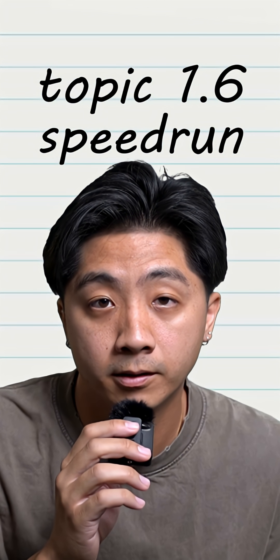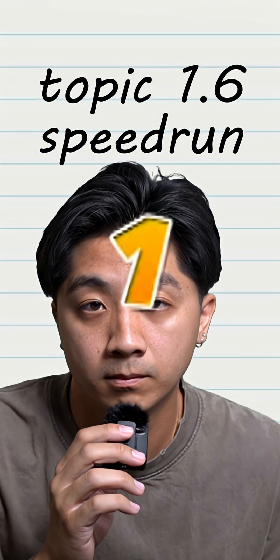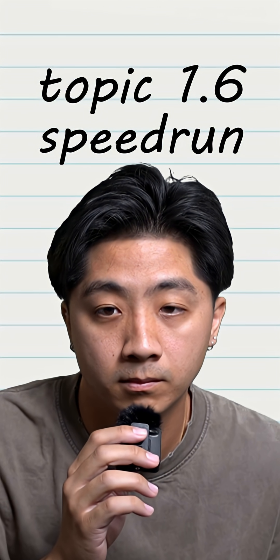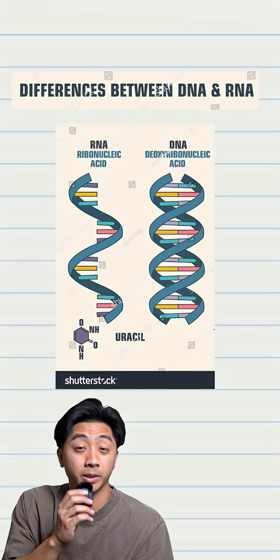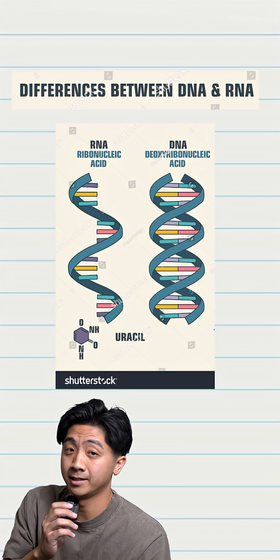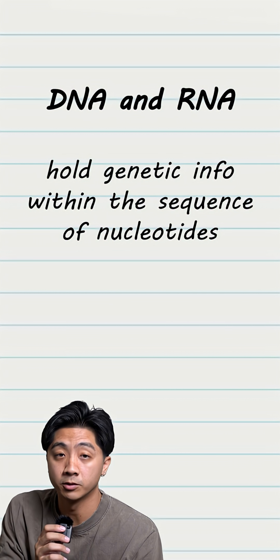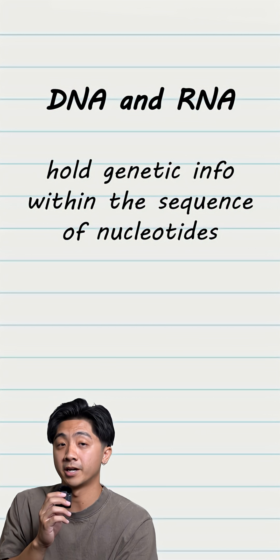This is topic 1.6, speedrun. Here's the vocab for the topic. The big players for nucleic acids are DNA and RNA. They hold genetic information within the sequence of their nucleotide monomers.